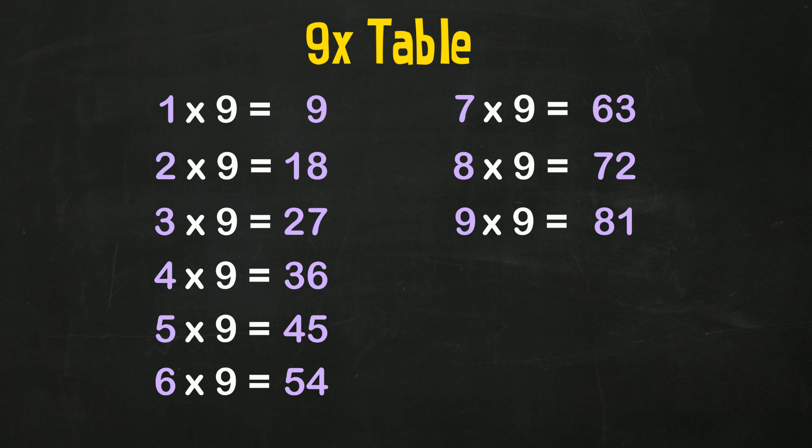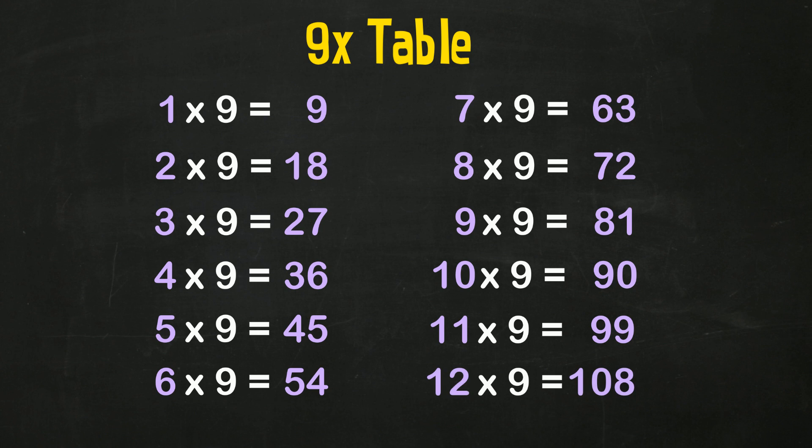Nine nines are 81. Ten nines are 90. Eleven nines are 99. Twelve nines are 108.